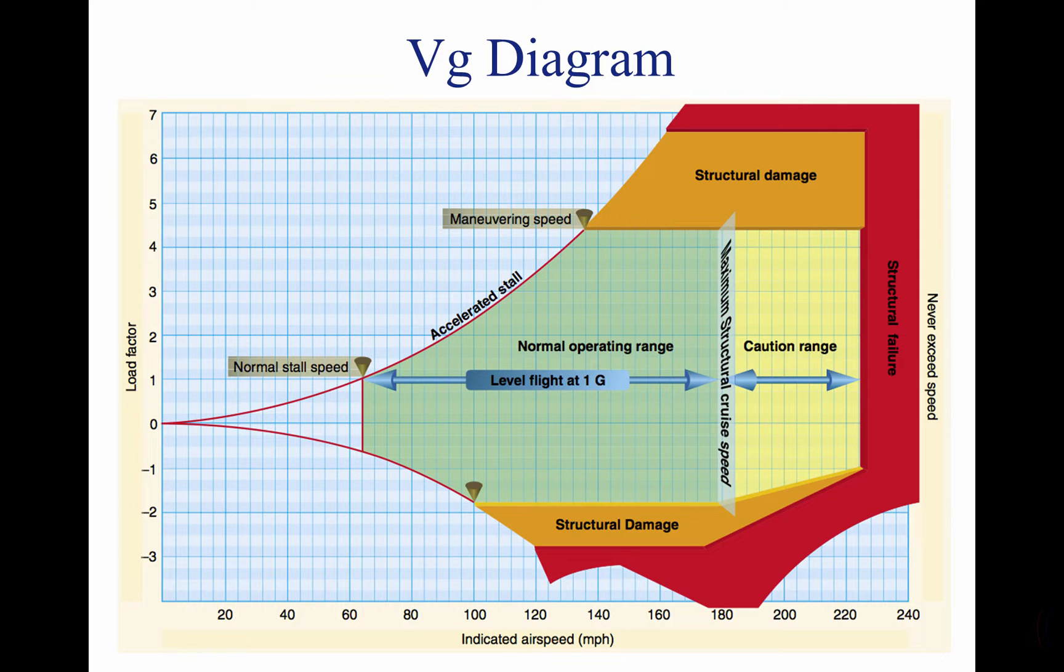the load factor can be checked at certain levels negative and positive. For example, if you wanted to know how many G forces you could exert on the aircraft at 160 miles per hour indicated airspeed, you would find on the bottom of the diagram, 160, and then draw a line straight up to see that any load under negative 2 and any load above 4.2 will cause structural damage to this aircraft according to its VG diagram.